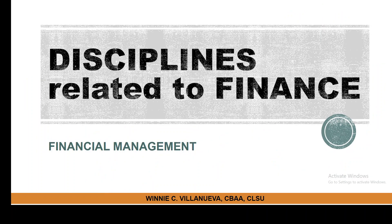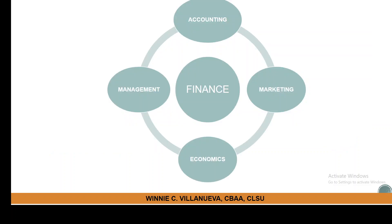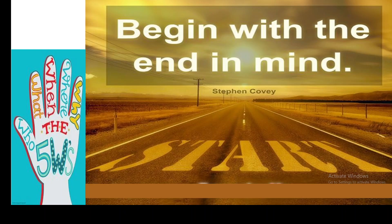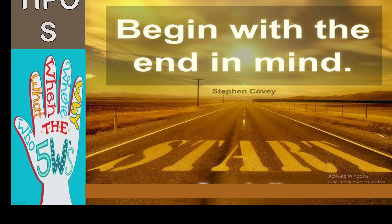What are the disciplines related to finance? Chapter one made mention of the primary disciplines, which are accounting and economics. Then you have management and marketing. Since there is a need to always begin with the end in mind, we will be using the 5Ws approach and the TIPOS framework — Tools, Input, Process, Output, and Storage — to better understand the concept, since we are going to have concept drills, concept checks, in addition to problems and cases in class.